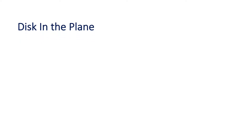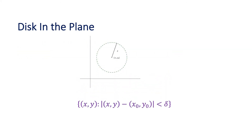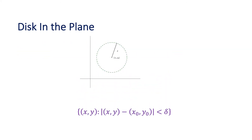Before I present the definition of limit, I have to introduce another idea called a disk in the plane. Here is the definition of an open disk: fix a point (x₀, y₀) in the plane. Then the open disk centered at (x₀, y₀) is the set of all points (x, y) whose distance from the fixed point is less than delta. It is basically a circle — not the boundary, because it is open — but it includes all the interior points. It will be a closed disk if we replace the strict inequality with less than or equal.